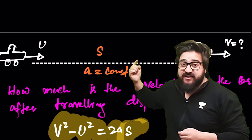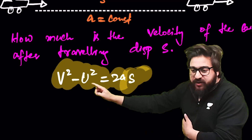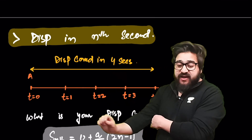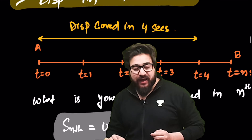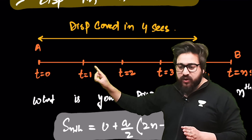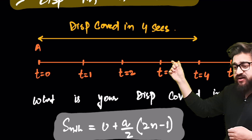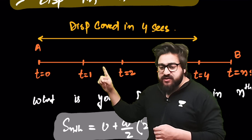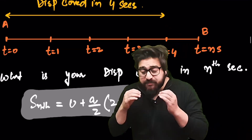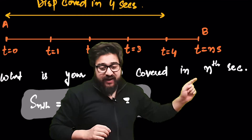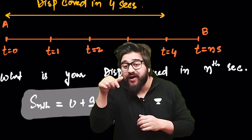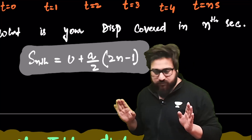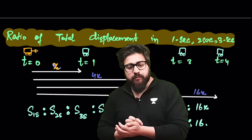The third equation of motion: if a body starts with velocity u and its final velocity is v with constant acceleration, then v² − u² = 2as. Next, displacement in the nth second: if a car starts from rest, the displacement covered in the nth second is given by: s_n = u + (a/2)(2n − 1), where u is initial velocity and a is acceleration.